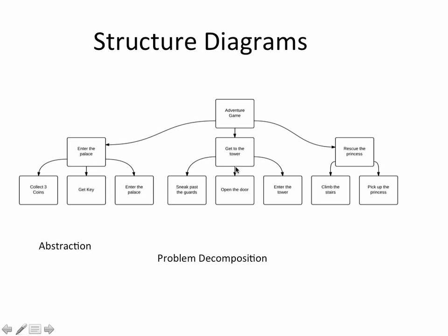The second section would be sneaking past the guards, opening the door, and entering the tower. And at that point, we've got to the tower. And then the final part would be climbing the stairs, picking up the princess. And then we've rescued the princess, and then the adventure game is complete.